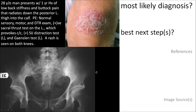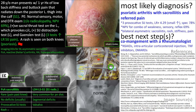The third case is a 28-year-old man with a one-year history of low back stiffness and buttock pain radiating down the posterior left thigh into the calf. On physical exam, there's normal sensory, motor, and reflexes. There's a positive sacral thrust test on the left reproducing the chief complaint, a positive sacroiliac joint distraction test on the left, and a positive Gaenslen's test on the left. A rash is noted on both knees. The pain pattern suggests a possible S1 radiculopathy, but with normal strength, reflexes, and sensory findings, S1 radiculopathy is effectively ruled out.